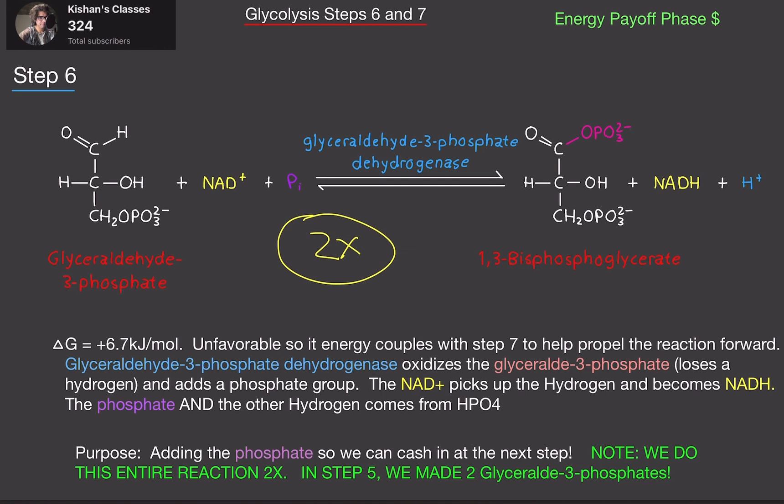So the delta G value is 6.7 kilojoules per mole. This is unfavorable. But this reaction actually couples with step 7 to propel this forward.